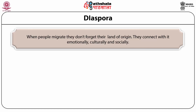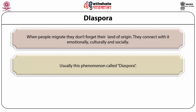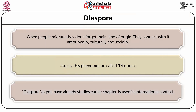When people migrate, they don't forget their land of origin. They connect with it emotionally, culturally, and socially. Usually, diaspora is not applied in the regional context — someone from Kerala migrating to Delhi or Tamilians migrating to other parts of India are not called diaspora. But when it happens in the international context, we call it diaspora — Indian diaspora, Chinese diaspora, Italian diaspora. There are about 25 to 30 million Indian diaspora today, spread across 150 or more countries.